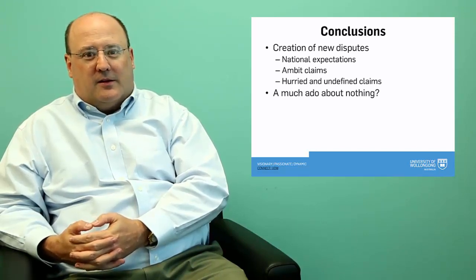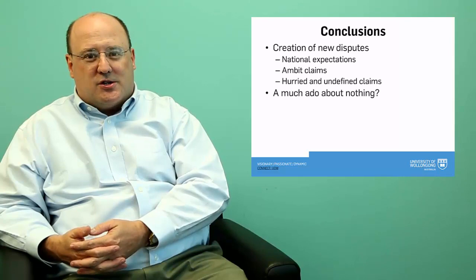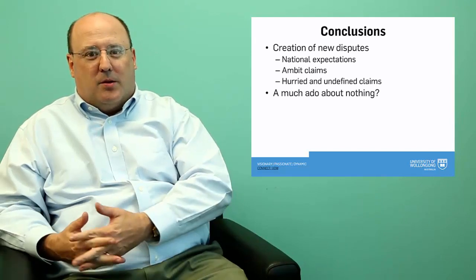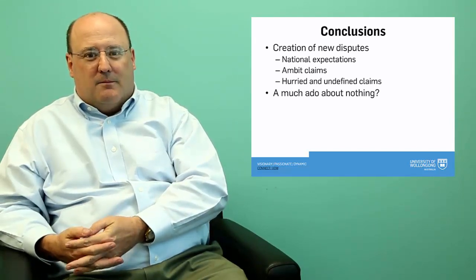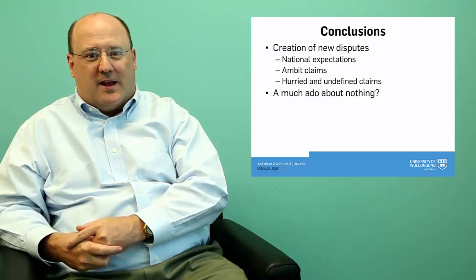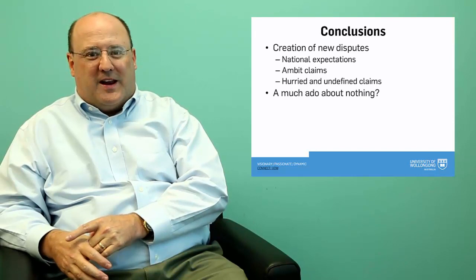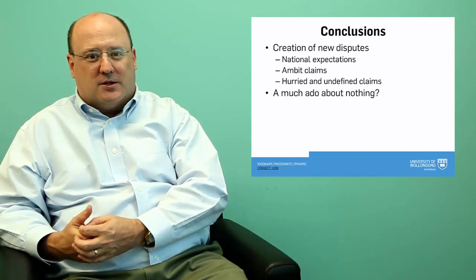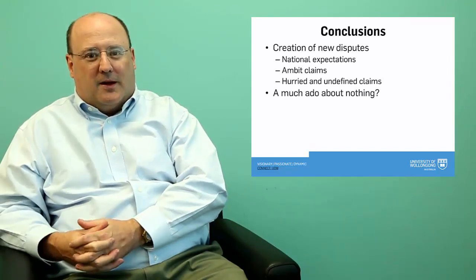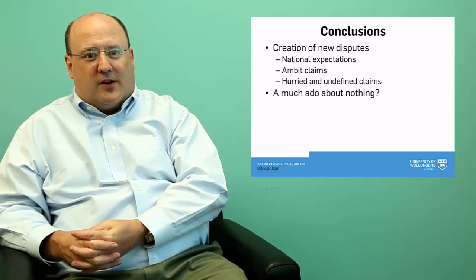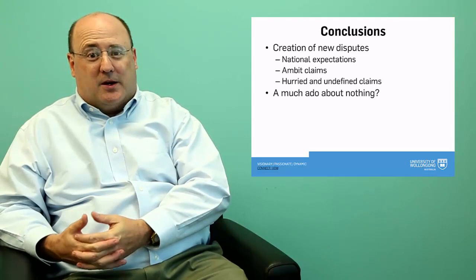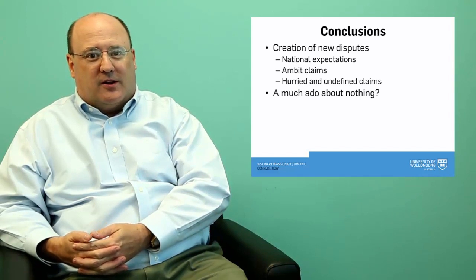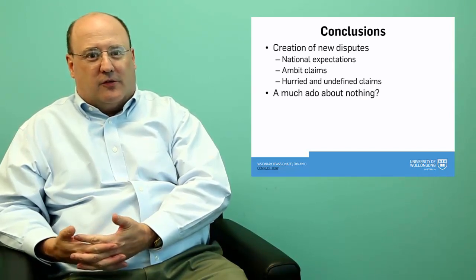It's not helped by the fact that making an extended shelf claim creates national expectations within states. A population of a state is told a large area belongs to them, albeit with a form of national jurisdiction, but it's still perceived to be theirs. And this creates expectations that it will be defended, that it will be looked to, that it will be supported in claims that are made before the Commission. This helps to exaggerate the problem and makes it more difficult for states to get on. It's also fair to say that some states have used the process to further ambit claims by asserting what they might wish to happen rather than what might be realistically accepted by their neighbors. This also serves to exaggerate problems.